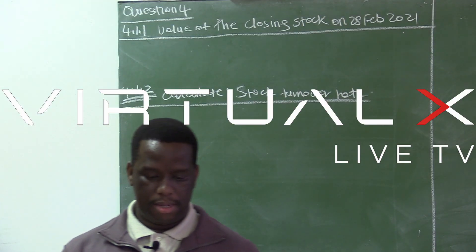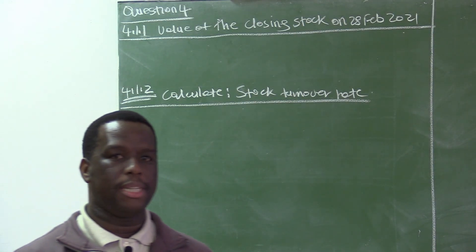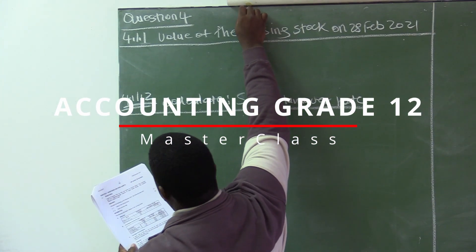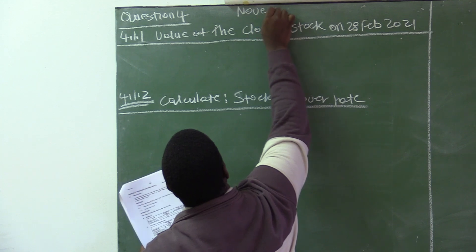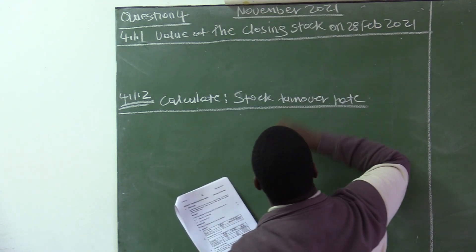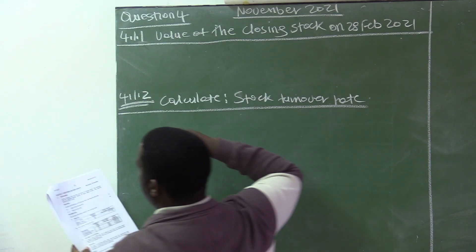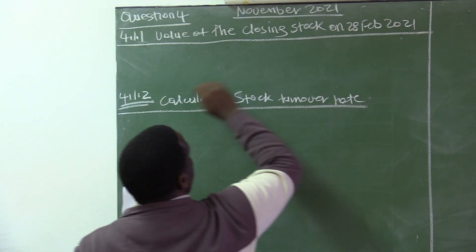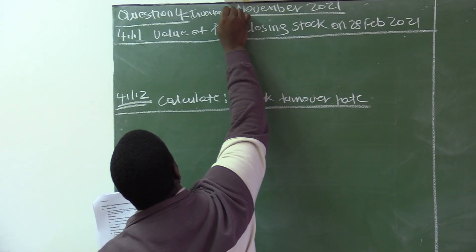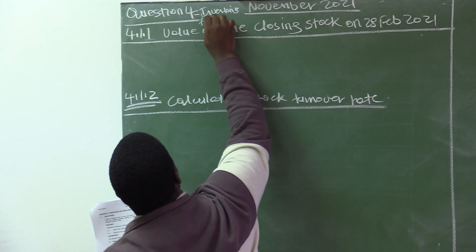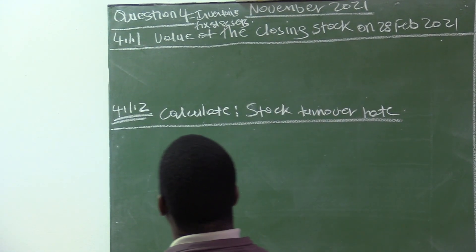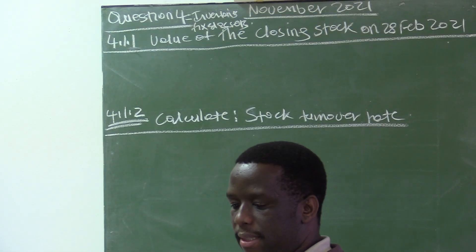Good day everyone. We are doing Accounting Grade 12, and this exam paper is November 2021. Question four, and our question four is inventories. There is also some fixed assets in this question — inventories and fixed assets, 40 marks, 30 minutes.